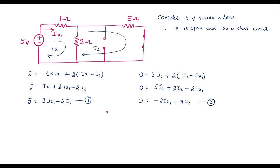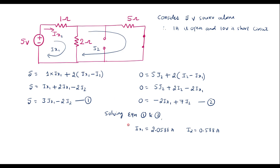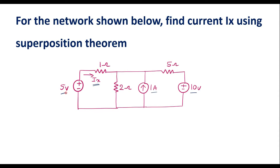Now let me solve these two equations. This can be solved directly using a calculator in equation mode with two variables. Solving equations 1 and 2, we get Ix1 equals 2.0588 amps and I2 equals 0.588 amps. We are interested in Ix1, so the current through the 1 ohm resistor considering the 5 volt source alone is 2.0588 amps.